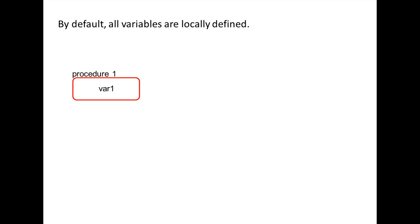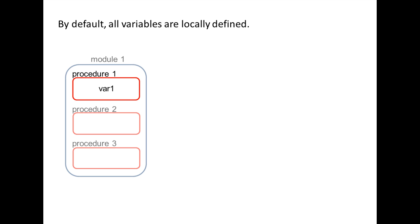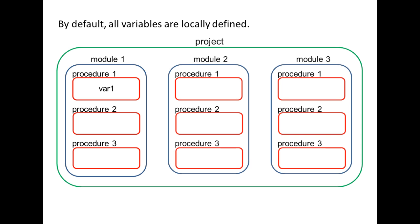In Procedure 1, the variable var1 is locally defined. var1's scope is the procedure in which it is declared, which is Procedure 1. You cannot use var1 in another procedure. It is possible to expand a variable's scope to all procedures within a module, or even all modules in a project. However, expanding a variable scope increases the risk of making errors that are very difficult to locate, and this practice is not encouraged except in very specific situations.